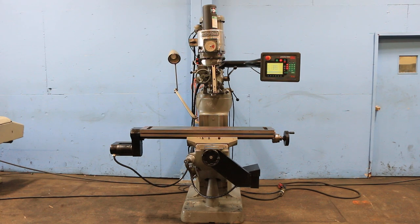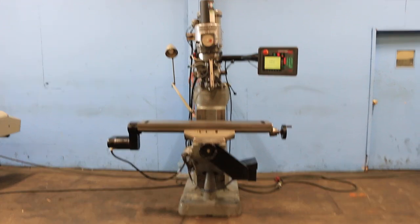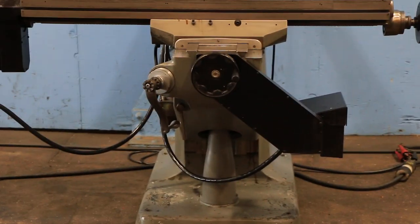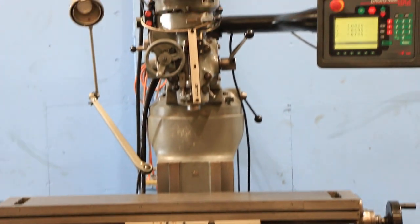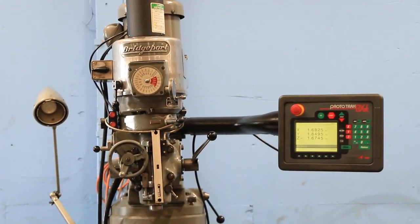Hey, we have a Bridgeport CNC milling machine, model 2J with a Prototrack edge control. The edge control was new in 2004, it's two axis, we're going to run her for you.